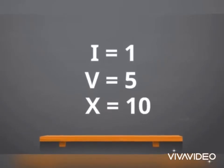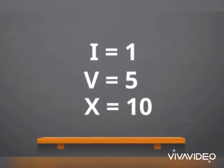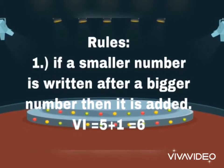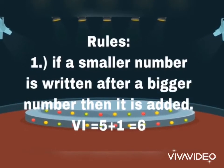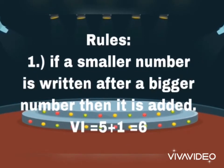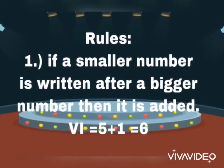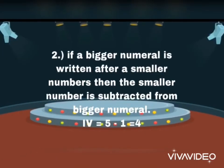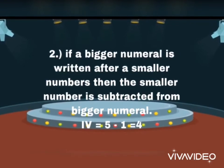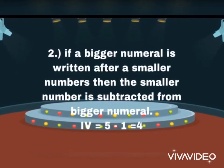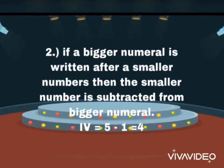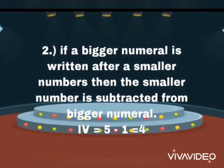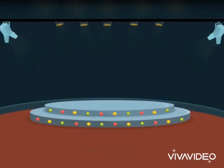I stands for 1, V stands for 5, and X stands for 10. Students, there are some basic rules as well. If a smaller number is written after the bigger, then it is added — like VI is equal to 5 plus 1, which is 6. If a bigger number is written after the smaller, then the smaller number is subtracted from the bigger — like IV is equal to 5 minus 1, which is 4.